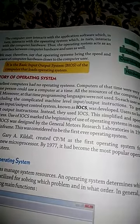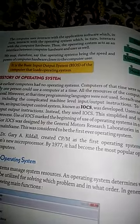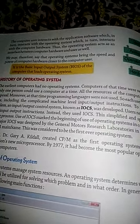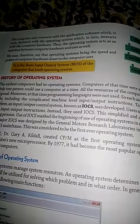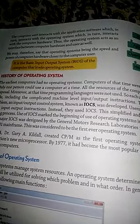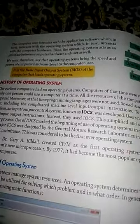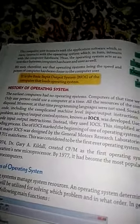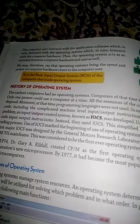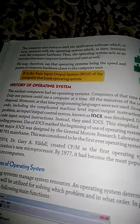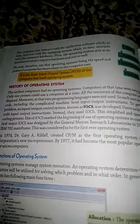We may therefore say that the operating system brings the speed and power of computer hardware closer to computer users. Operating system जो होता है वो hardware और user के बीच जो speed और power होती है उनका तालमेल करके system को प्रदान करता है। History of Operating System: The earliest computers had no operating system.